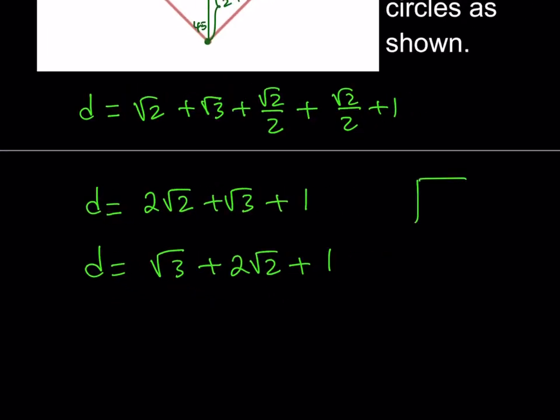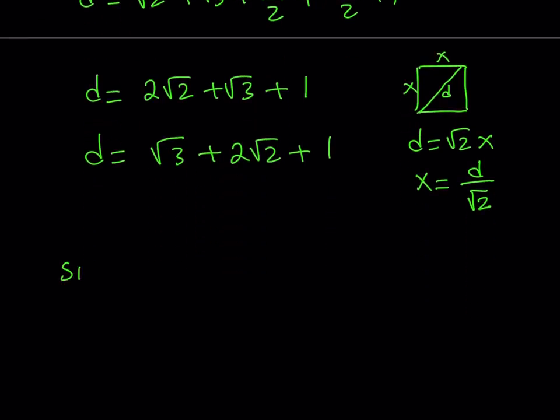Now, what's the relationship between the diagonal of a square and its side length? Let's call the side length x here. We know that from 45-45-90 triangle, that the diagonal is going to be root 2 times the side length. But we're trying to find the side length. Therefore, the side length is going to be the diagonal divided by square root of 2. So to find the side length for the square then, what we need to do is take the diagonal, and we call that x, take the diagonal, root 3 plus 2 root 2 plus 1, and divide it by root 2. That's all you have to do.